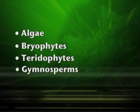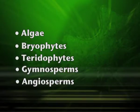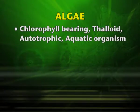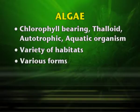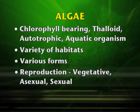Under the plant kingdom we will be dealing with algae, bryophytes, pteridophytes, gymnosperms and angiosperms. Algae are chlorophyll-bearing organisms. They are thaloid, autotrophic, aquatic organisms. They show a variety of habitats and are of various different forms. Reproduction may be vegetative as well as by asexual and sexual means. Maximum carbon dioxide fixation on the earth is done by algae, and they are the chief producers for marine organisms.